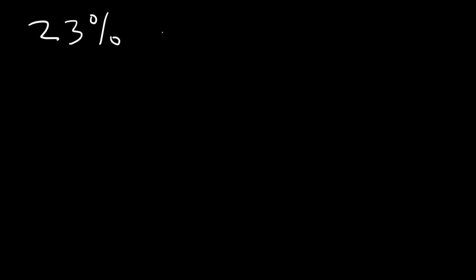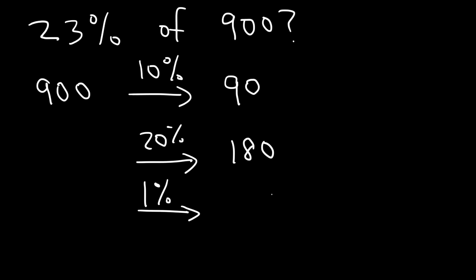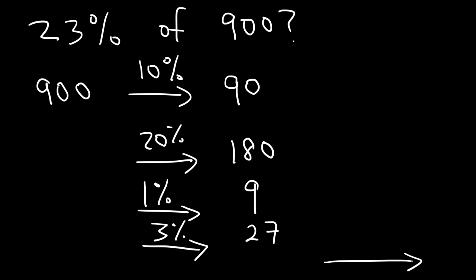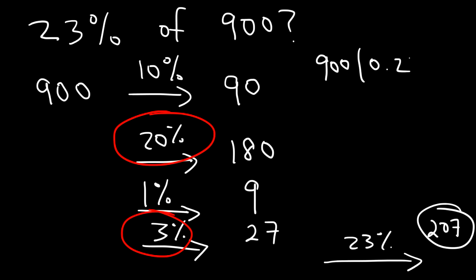Now what about 23% of 900? First, let's find 10% of 900, which is 90. 20% is 2 times 90, so that's 180. 1% of 900 is 9, and 3% is 9 times 3, which is 27. In order to get 23%, all we need to do is add 20% and 3%: 180 plus 27 is 207. So 900 times 0.23 has to be 207, which it is.